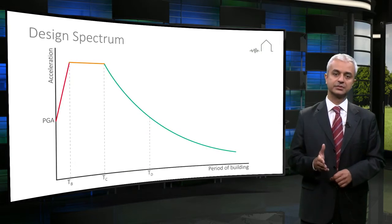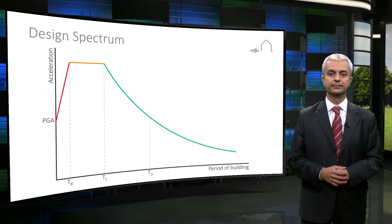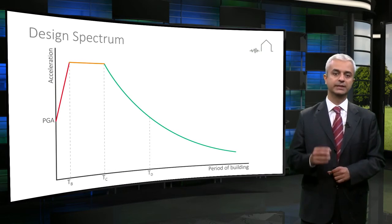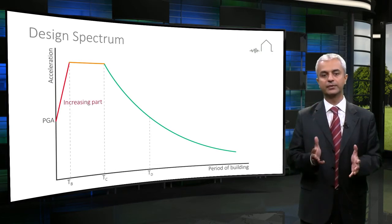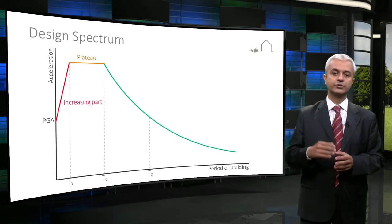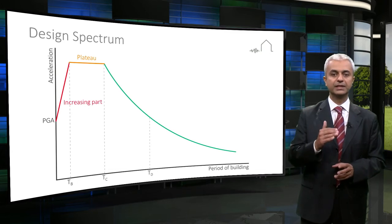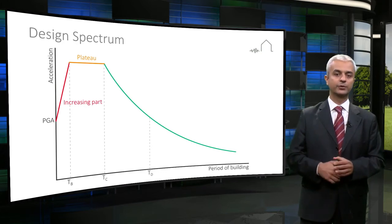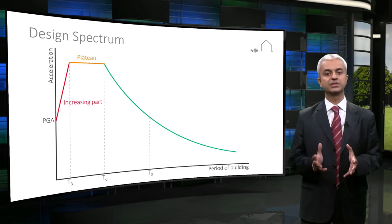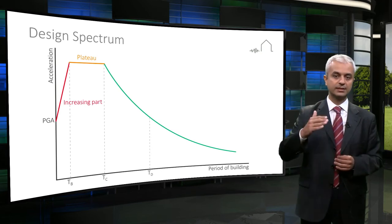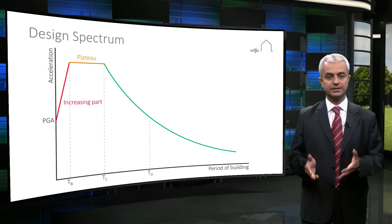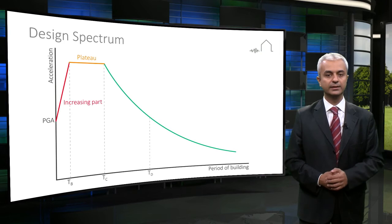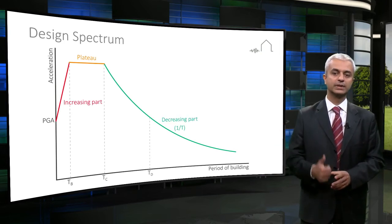The vertical axis gives spectral acceleration and the horizontal axis gives the period of the structure. It starts with peak ground acceleration where period is zero. Design spectra are normally built up in three parts. First, there is an increasing part which is normally a linear function. Then there is the plateau — the top line showing the maximum acceleration value. Corresponding periods for the plateau change depending on the site class: for stiff soil conditions these values are relatively small, and for soft soil conditions they are higher. The period of a building is very much related to the number of floors; when the number of floors increases, the period also increases. This means that in stiff soils, low-rise buildings, and in soft soils, high-rise buildings will have a high possibility of experiencing resonance effects. And finally, there is the decreasing part, which is normally a function of 1 over the period of the structure.